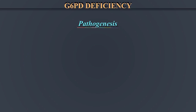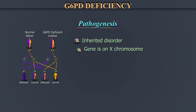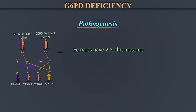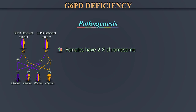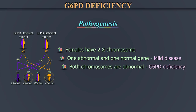G6PD deficiency is an inherited disorder, the gene for which is on the X chromosome. Since males have a single X chromosome, if it is defective, the disorder is present. Therefore, G6PD deficiency is more common in males. Females have two X chromosomes. If one abnormal and one normal gene is present, she will have a mild disease. If both X chromosomes are abnormal, she will have G6PD deficiency.